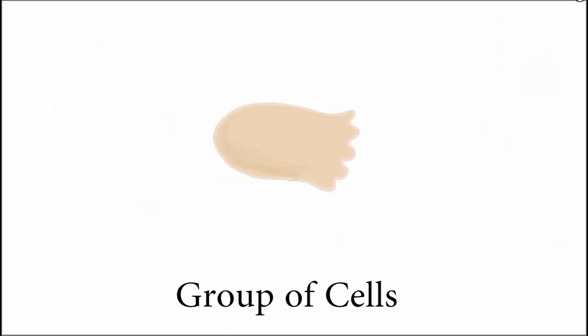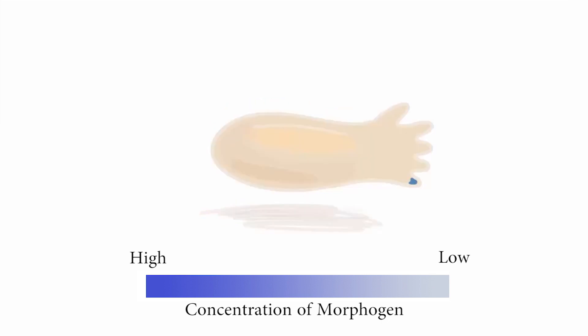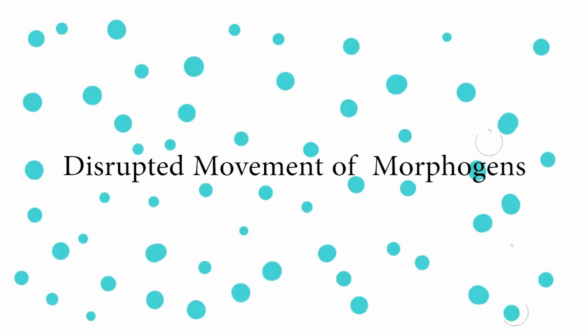For example, arm development begins with just a group of cells bulging out from the fetus. During this process, a morphogen is secreted at the bottommost part of the bulge. The cells sensing the strongest concentration of morphogen form the little finger, while those sensing the lowest amount become the thumb.